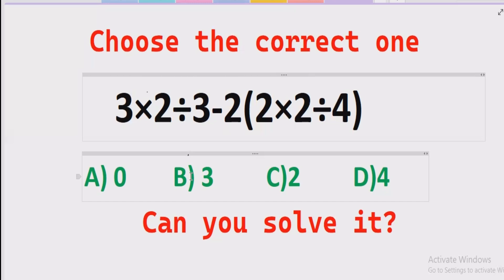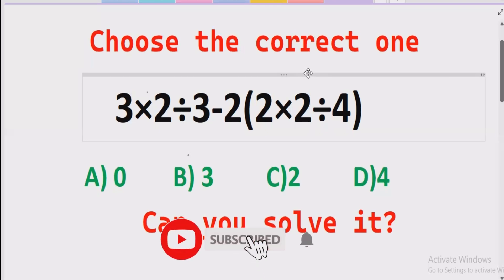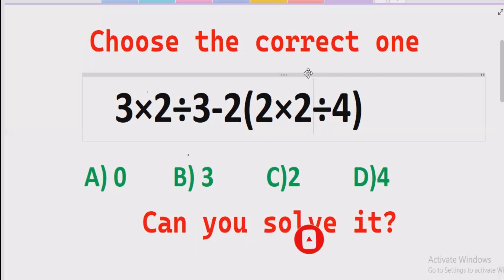Hello guys, welcome to my channel. Today we will solve another quiz related to arithmetic expressions. The quiz contains basic operations: multiplication, division, and subtraction. We have to solve this quiz using PEMDAS and BODMAS methods and find out which answer is correct. In the answer list we have four answers: A is zero, B is three, C is two, and D is four. Before starting, please like and subscribe my channel and share with others.